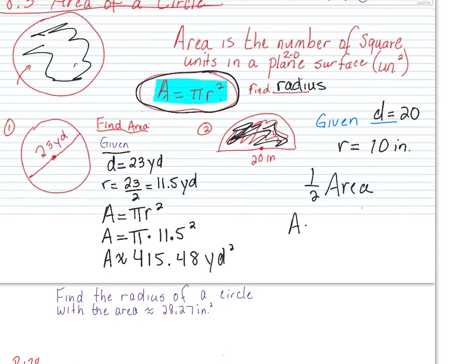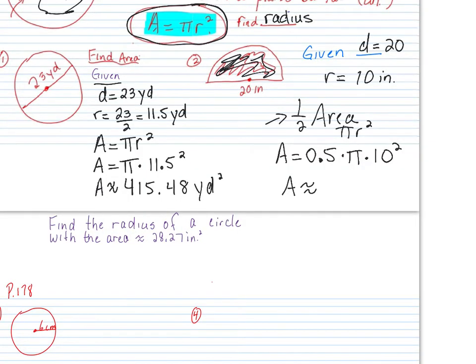So area equals, how am I going to write one half? 0.5. The formula is pi r squared, right? So we're going to take pi times the radius is 10 and square it. Give me the area of this half circle to the nearest hundredth. So yes, Johnny, you're right. It's 157.08. What's my label? Inches squared, not cubed. Cubed goes with 3D, and that's volume.